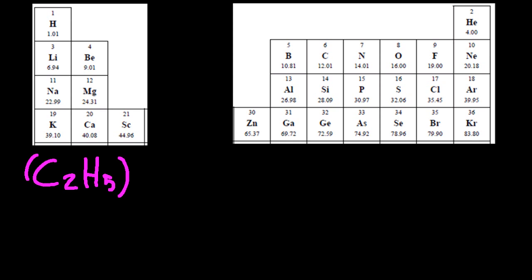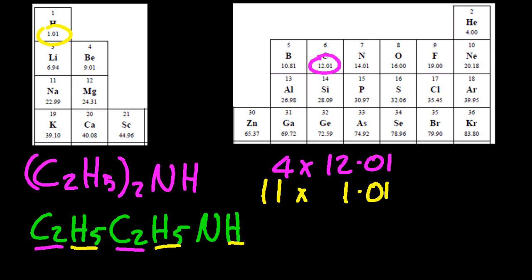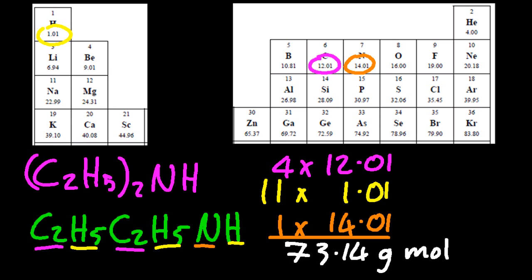All right, this one's a little more complicated. It has parentheses there, so that two means that what comes before it in the parentheses has to be doubled. So I'll expand it, write it out in full, and then it's the same procedure: find the elements on the periodic table, 11 hydrogens and that one nitrogen, plus the carbons from before, and that gives me a molar mass of 73.14 grams per mole. You've got to have those units or it's wrong.